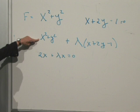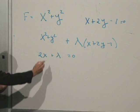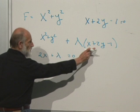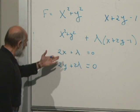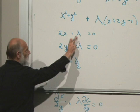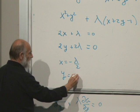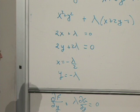Differentiating with respect to x: 2x plus lambda equals zero. Differentiating with respect to y: 2y plus 2·lambda equals zero. Now we can solve for x and y in terms of lambda. X equals minus lambda over two. Y equals minus lambda. We've solved our problem except we don't know what lambda is. What we do now is choose lambda so that the constraint x plus 2y minus 1 equals zero is actually satisfied.